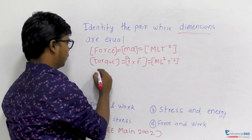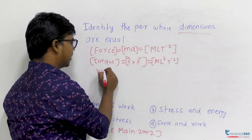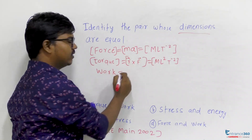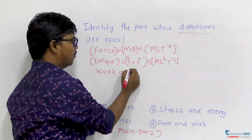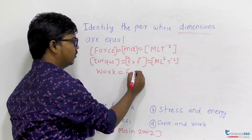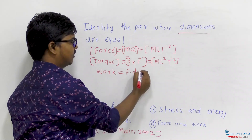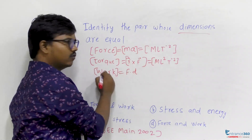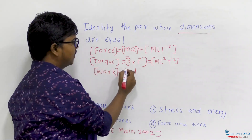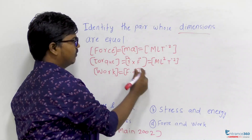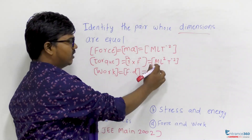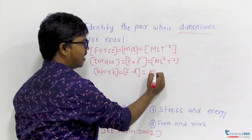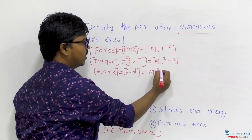Work and force are related by the formula: work equals force into displacement. So the dimension of work equals the dimension of force into displacement, which is M L² T minus 2.